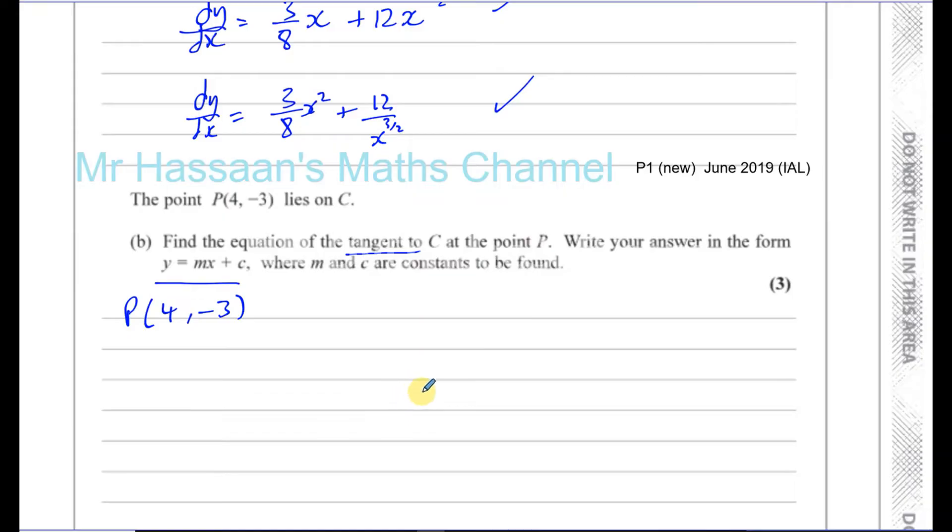Now the gradient of the tangent is going to be given by substituting the value of x of the point P into the gradient function. This dy/dx is the gradient function. It tells us the gradient of the curve at any point that we want to find it. So we want to find the gradient when x equals 4 because at P, x equals 4. So when x equals 4, the gradient of the tangent of this curve is going to be 3/8 times 4² plus 12 over. Now this means x to the power of 3/2 means the square root of x³. So this is the square root of 4³.